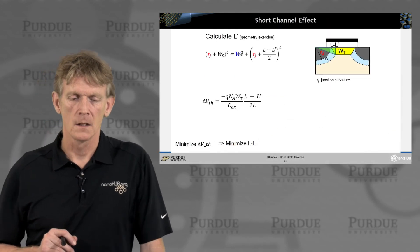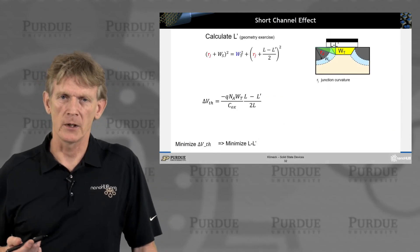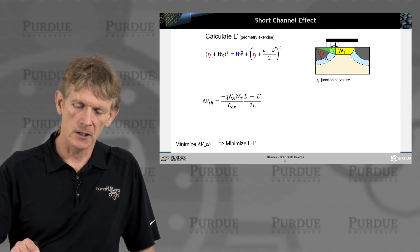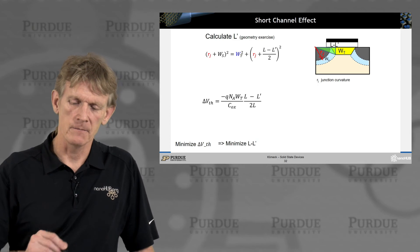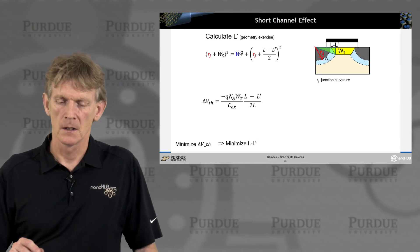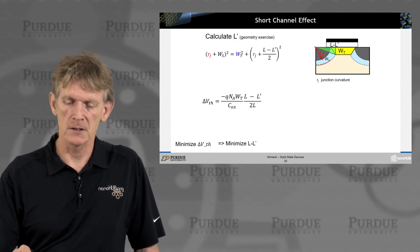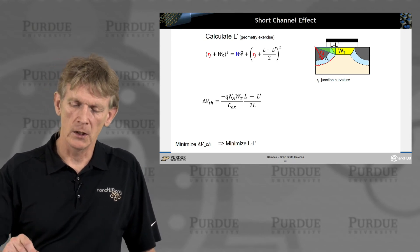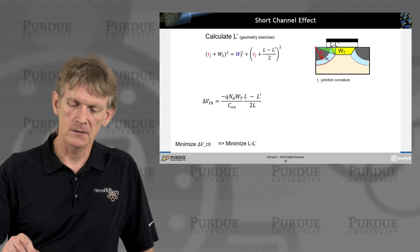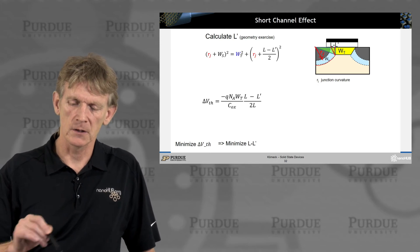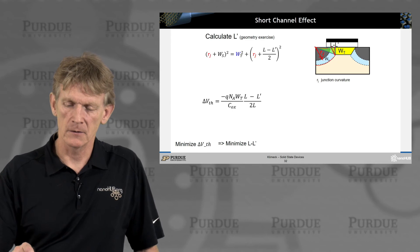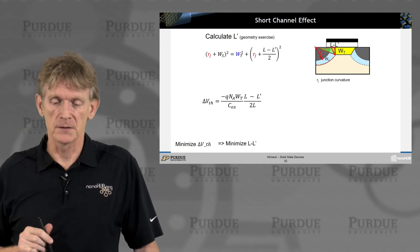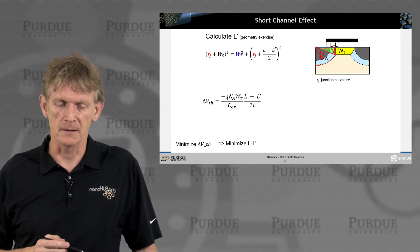Let's calculate this L prime. How big is it? Let's introduce this junction radius here, Rj, in the system. We can calculate the depletion region in the source. If we wanted to know what's L minus L prime in this trapezoid, we can just write down this triangle with a 90 degrees angle.